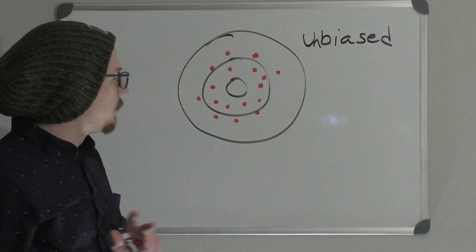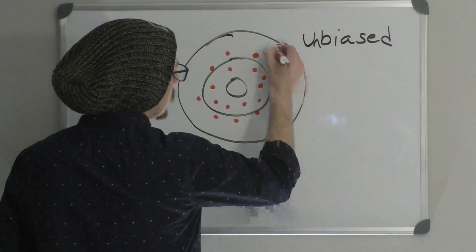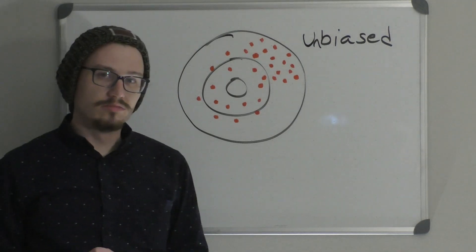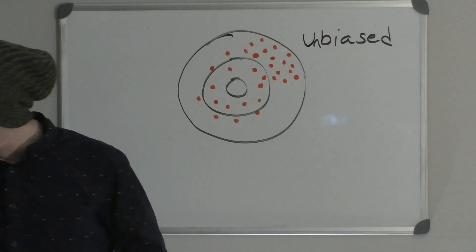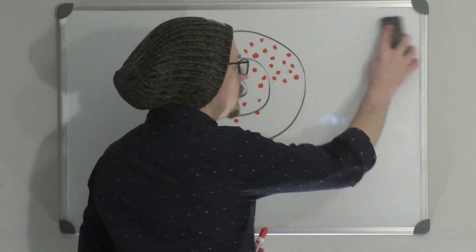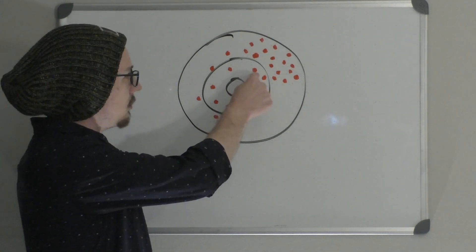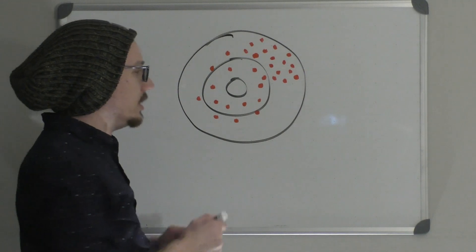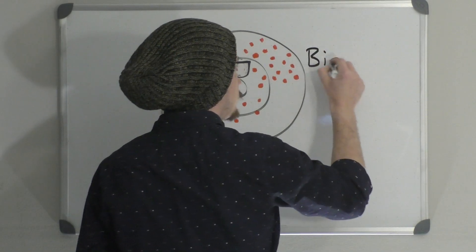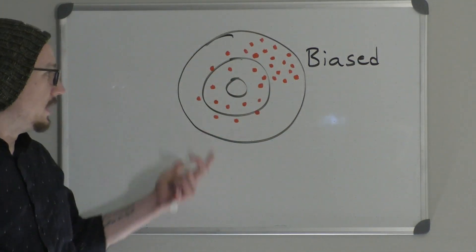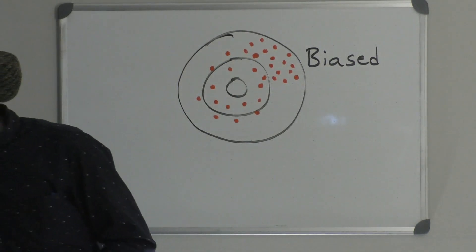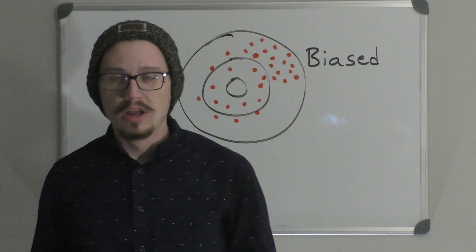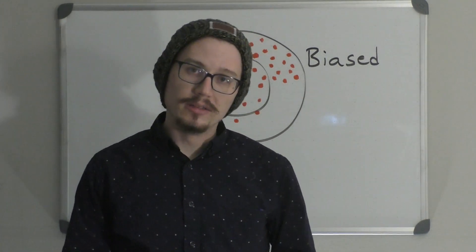If the average of all those dots hits the center of the target, this is an unbiased estimator. However, if you add dots clustered away from center, the average wouldn't hit the middle — it would be pulled off-center. That would be a biased estimator. We don't want biased estimators. First and foremost, we want an unbiased estimator. Luckily for us, the sample mean is an unbiased estimator.